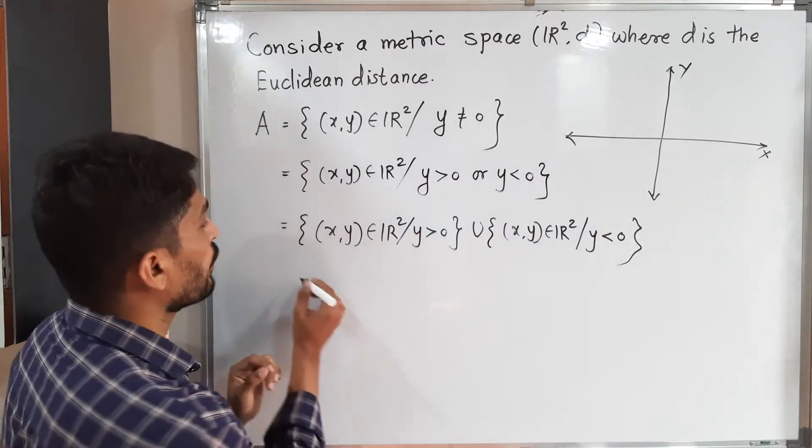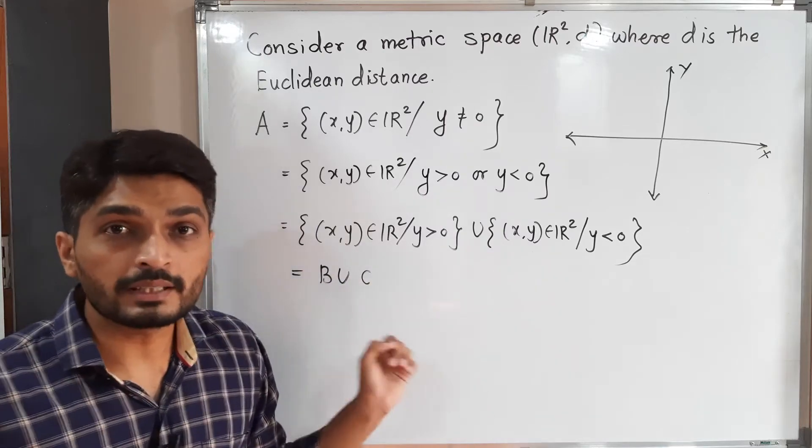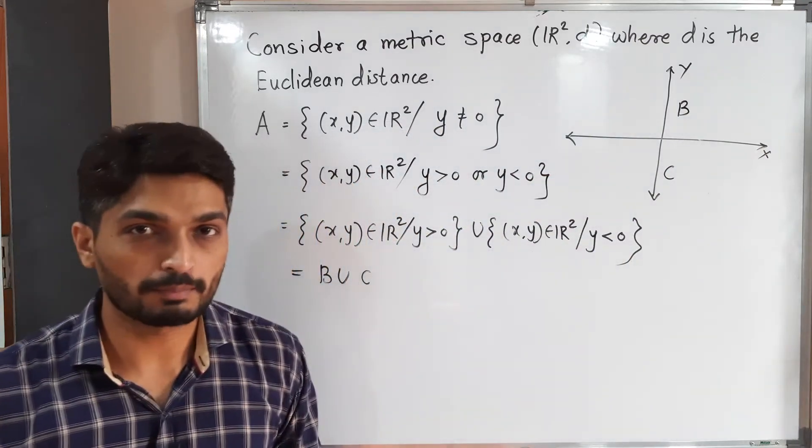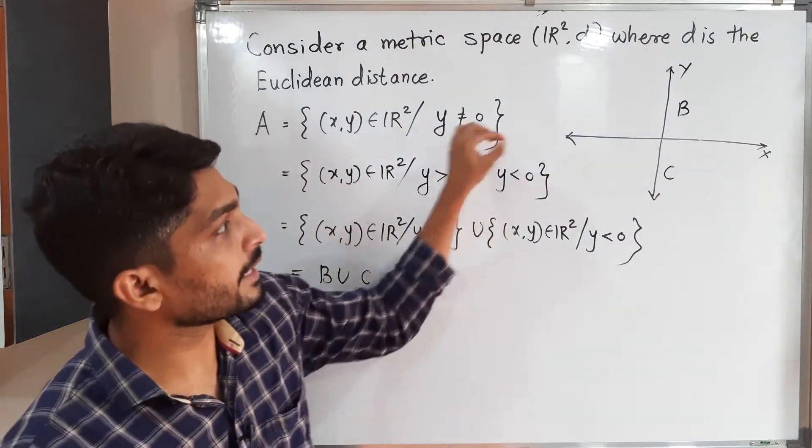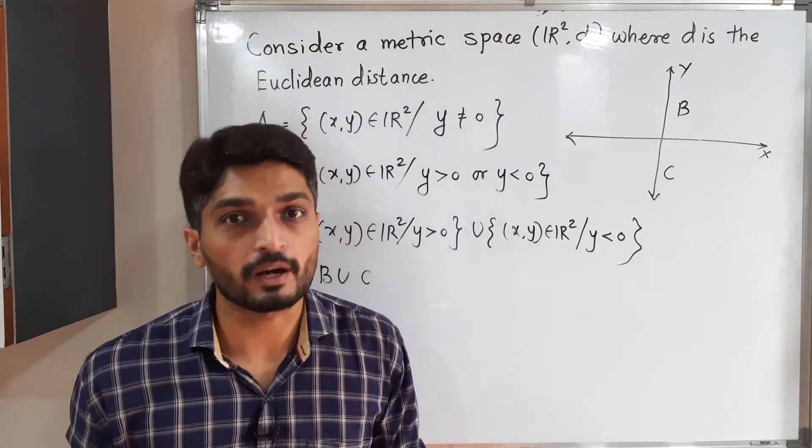We have expressed it in this way: y is positive means first and second quadrant where y is positive, and y is negative means third and fourth quadrant where y is negative. I will call it set B union set C. B is nothing but the upper half of the plane and C is nothing but the lower half of the plane. This x-axis is removed from the set; otherwise, we have the entire plane.